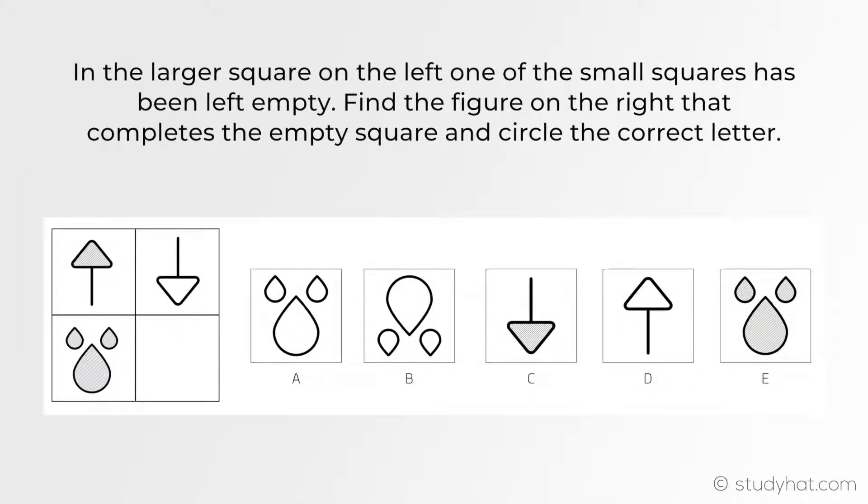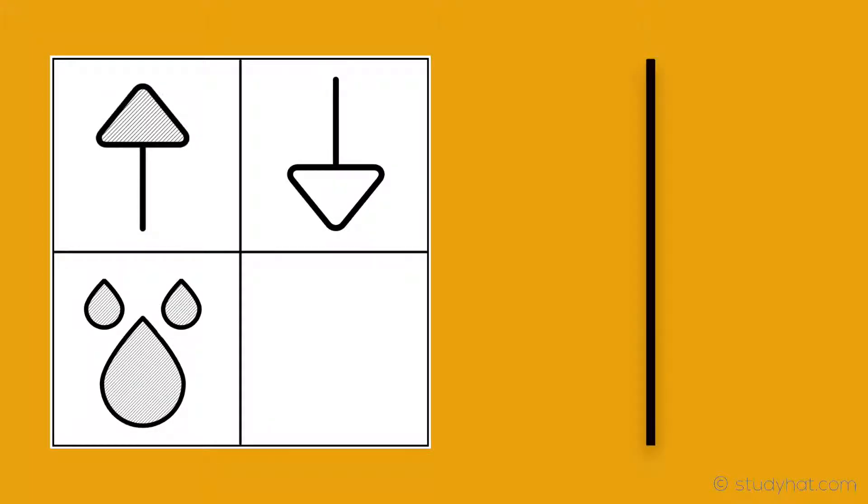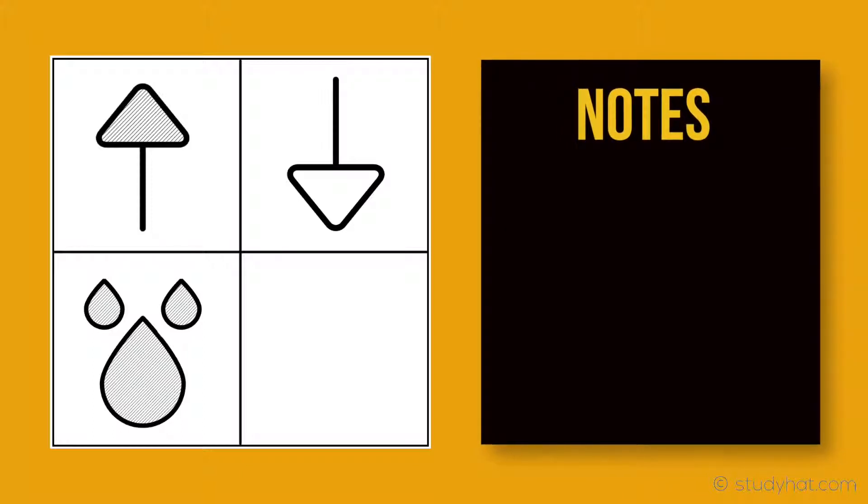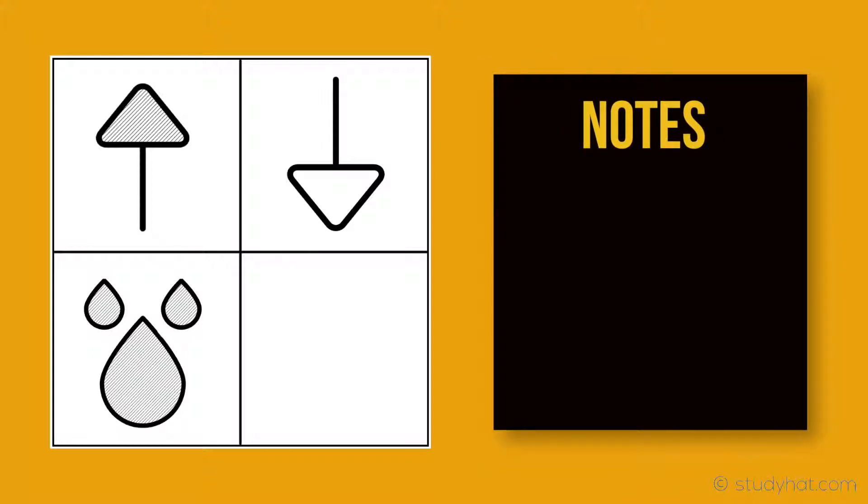Question 3. Once again, the question says, in the larger square on the left, one of the small squares has been left empty. Find the figure on the right that completes the empty square and circle the correct letter. This one requires a bit more thinking, as it combines rotation and also shading. The key is to always remember to pay close attention to the shading when it comes to non-verbal reasoning, since it's one of the main ways you could get caught out.